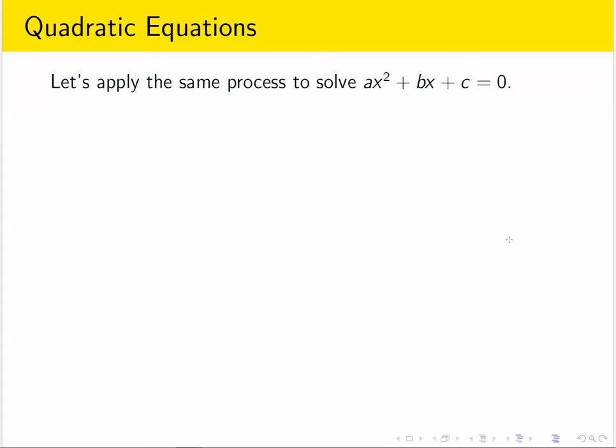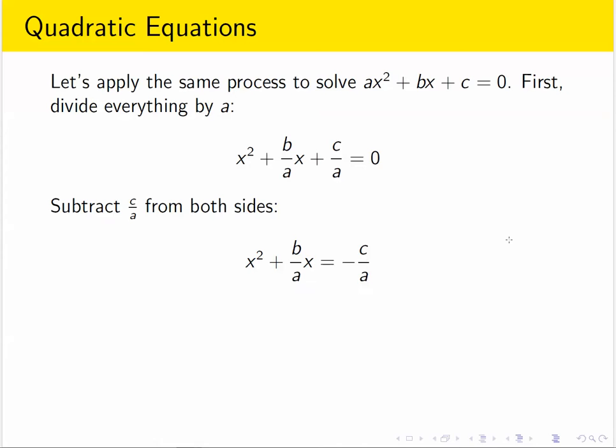Start with an equation like the one we had. Imagine first that we're going to divide everything by the coefficient of x squared to make our numbers smaller. And then let's move the constant term to the right side.